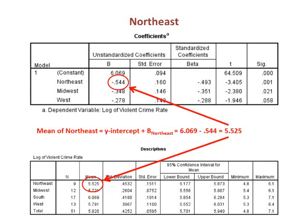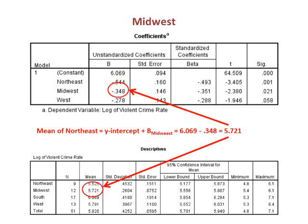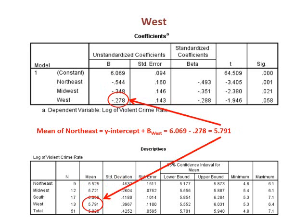We can recover the value of each region by adding the beta to the constant. The value of the mean of northeast is the constant, 6.069, minus 0.544, which equals 5.525. The mean of midwest is the constant, 6.069, minus 0.348, which equals 5.721. The mean of west is the constant, 6.069, minus 0.278, which equals 5.791.